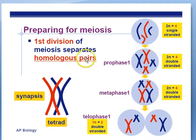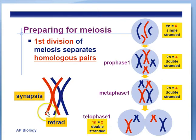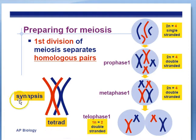The first division of meiosis separates homologous pairs. During prophase I, we have the chromosomes condensing and the nuclear membrane breaks down, just like mitosis. However, when the chromosomes pair up, at the area where they overlap we're going to exchange DNA. The group of four sister chromatids all lined up next to each other is called a tetrad.